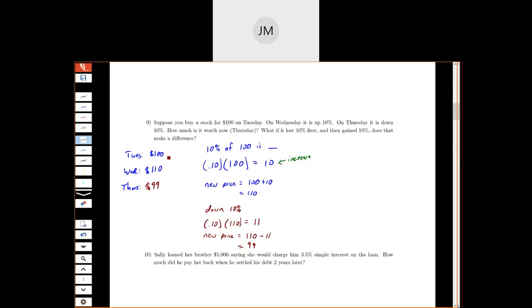So going up by 10% and then down by 10% doesn't land us back in the same spot because we're not taking 10% of the same thing each time. So to answer the first question, how much is it worth now on Thursday? On Thursday it's worth $99.